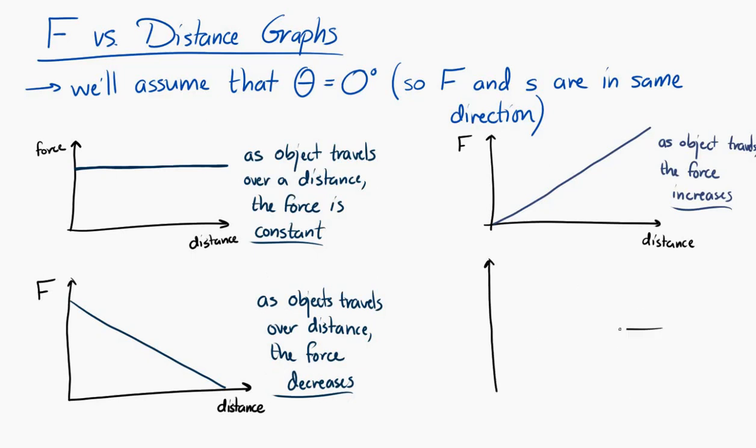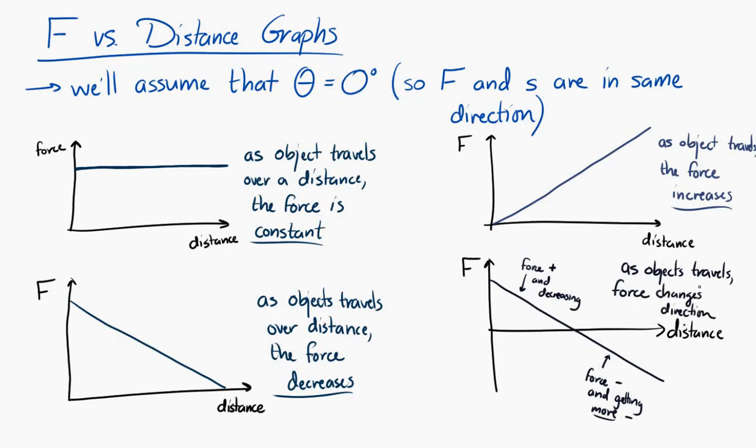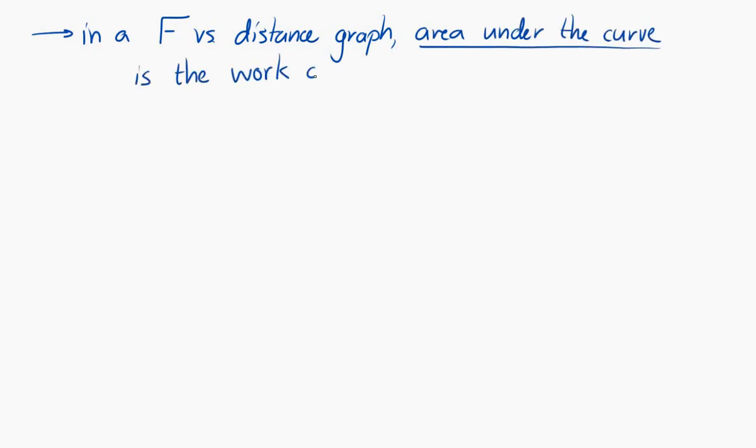So we can even draw this one, where it goes under the axis. And this is saying that as the object travels, the force at first is big and positive. And then as time goes by, the force actually changes direction to become negative. Now, the reason why I'm bringing this up is because it turns out that in a force versus distance graph, like these that I've shown you, the area under the curve represents the work that is done.